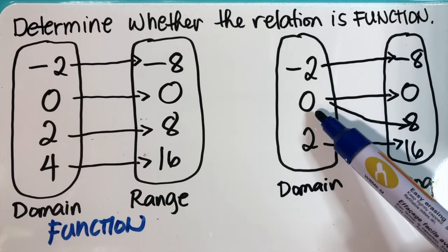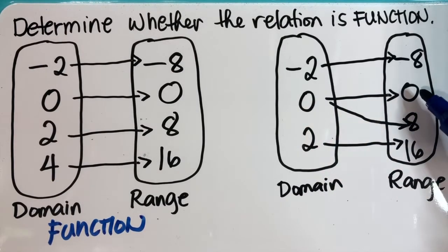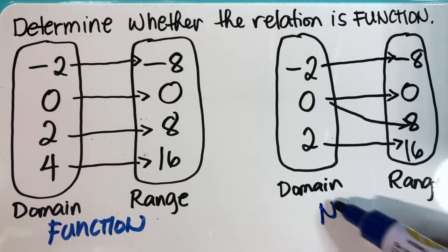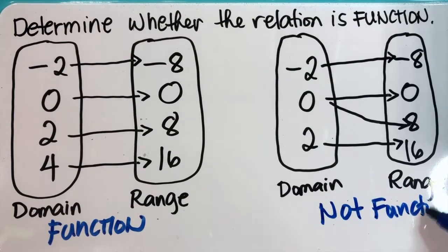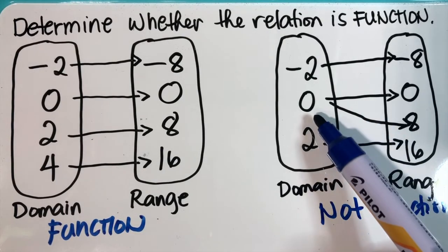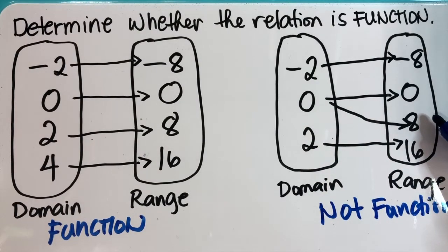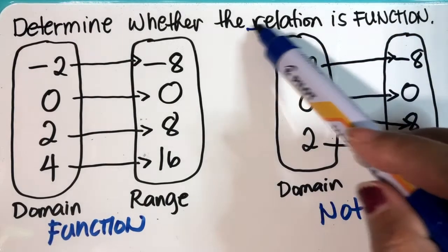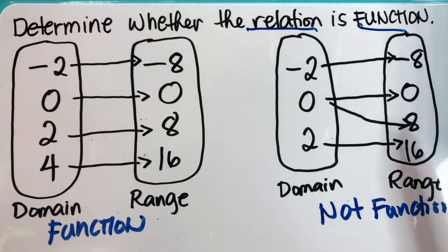Negative two is paired with negative eight. But look at zero — zero is paired not only with zero but is also paired with eight. Therefore this relation is not a function. Why? Because zero is paired with more than one value of the range.